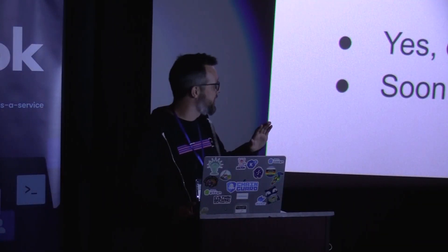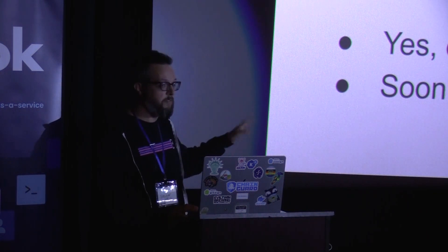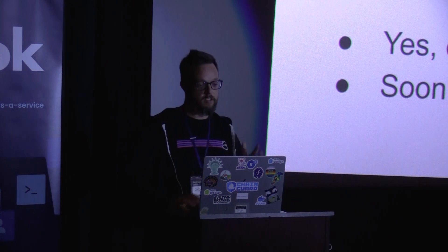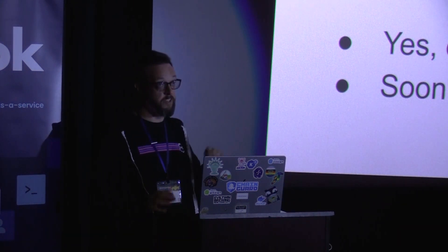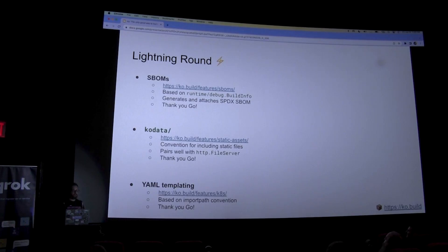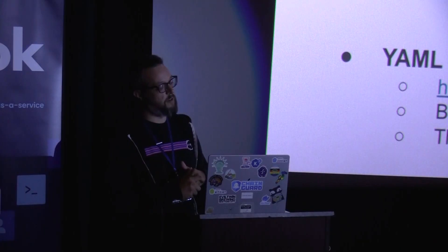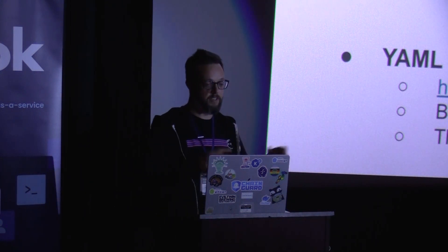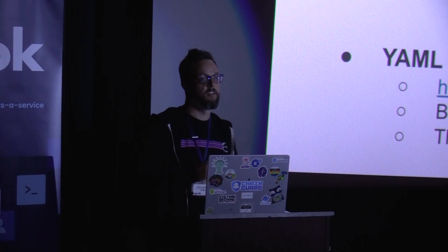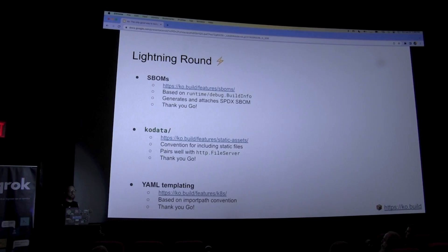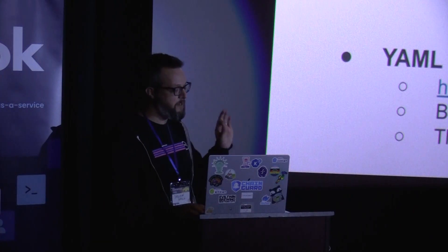If you've ever had to use a Windows container image, I'm so sorry. I also think there's a lot of exciting stuff we could do with WASM — the WASM ecosystem is large and growing and I think there's a lot of cool stuff that Go, Ko, and WASM could do together. Lightning round — other things Ko does besides be simple and fast: it generates SBOMs. Actually Go generates the SBOMs — Ko just translates those into SPDX SBOMs and attaches them to the container image it pushes. There's also a static file convention: if you have a directory called kodata, Ko will put all of those things in the container image too. It pairs very nicely with http.FileServer, which if you haven't used it is so simple and so good.